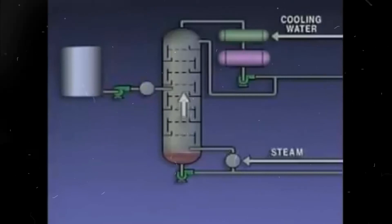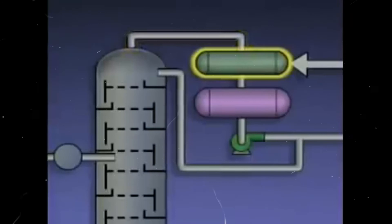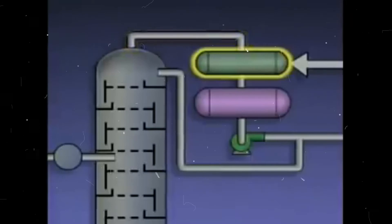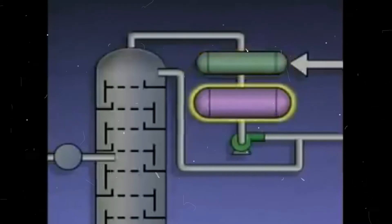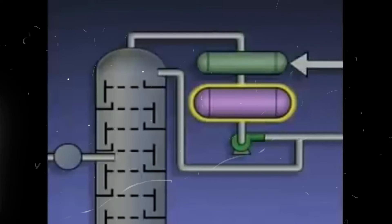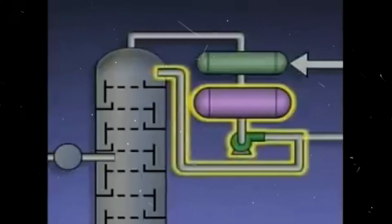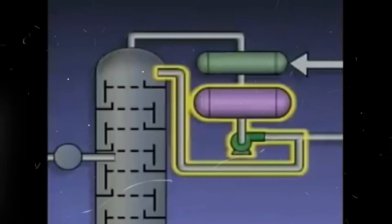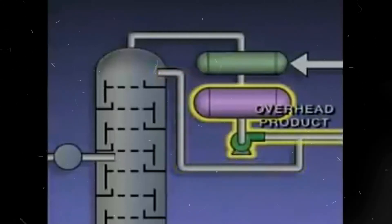The vapors that rise up in the tower are routed to a condenser. The purpose of the condenser is to cool and condense the vapors into liquid. From the condenser, the liquid flows into a receiver or accumulator. The receiver provides a reservoir for the liquid. Part of the liquid from the receiver is pumped back into the top of the tower, and part of it is drawn off as the tower's overhead product.